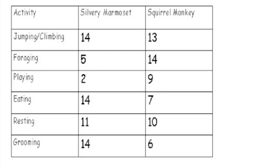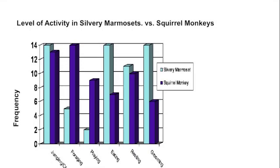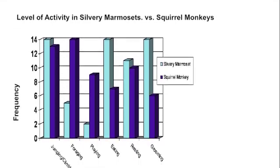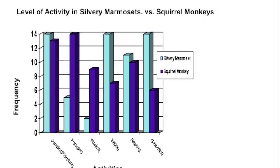Now let's go back to our original data table. We know that we're not comparing changes over time and we're not showing the parts of a whole. We're definitely comparing two different types of monkeys in different categories. So which graph would be best for this data table?